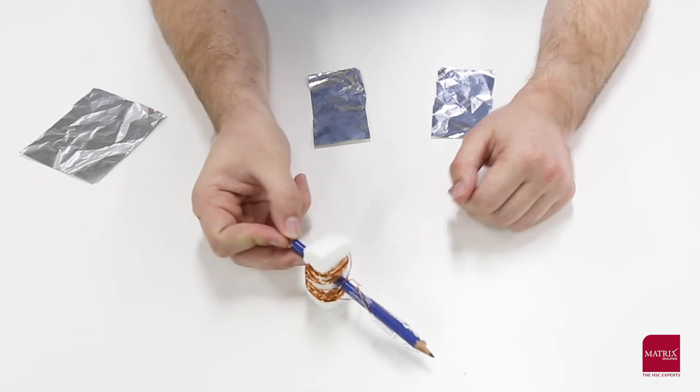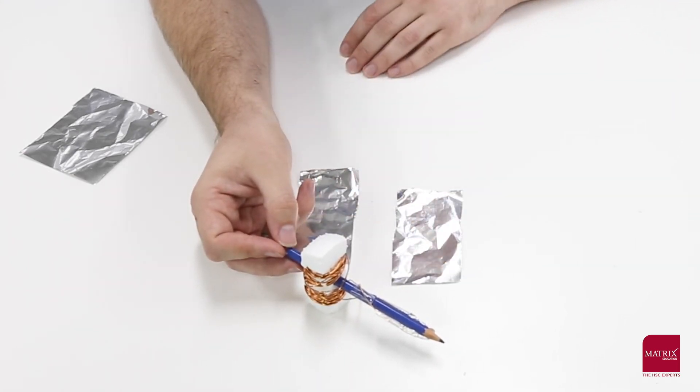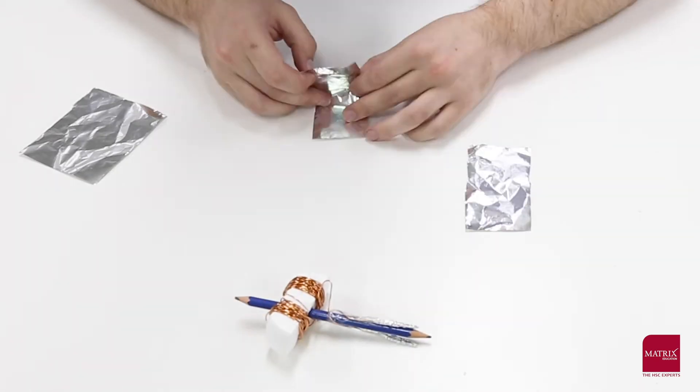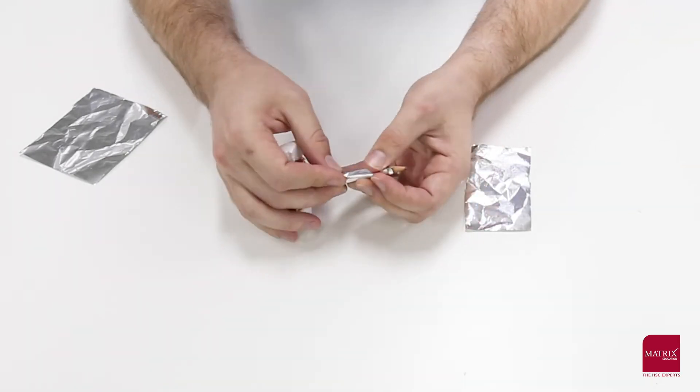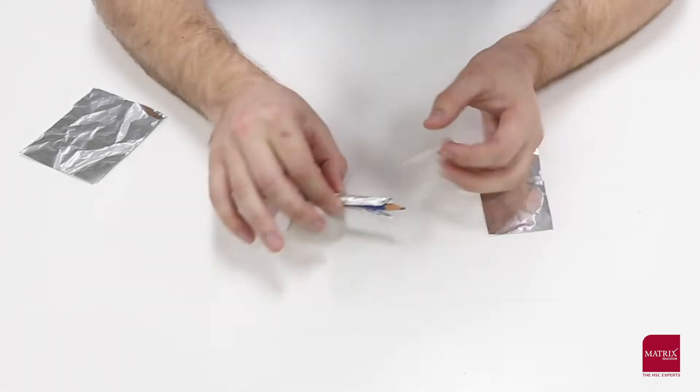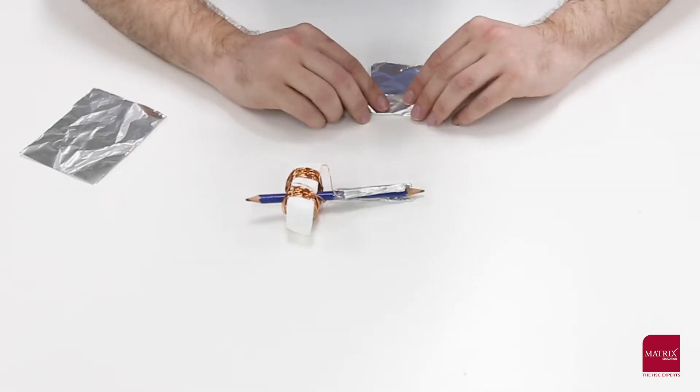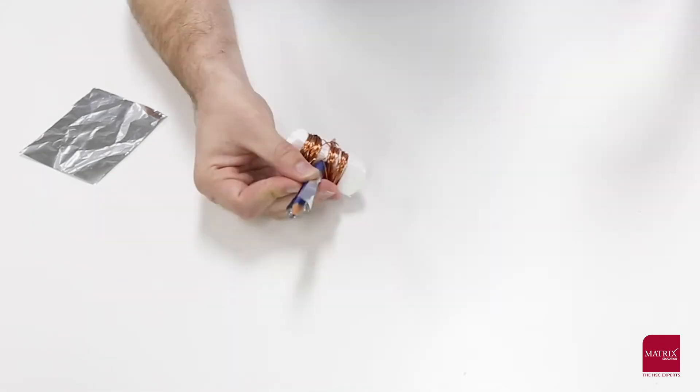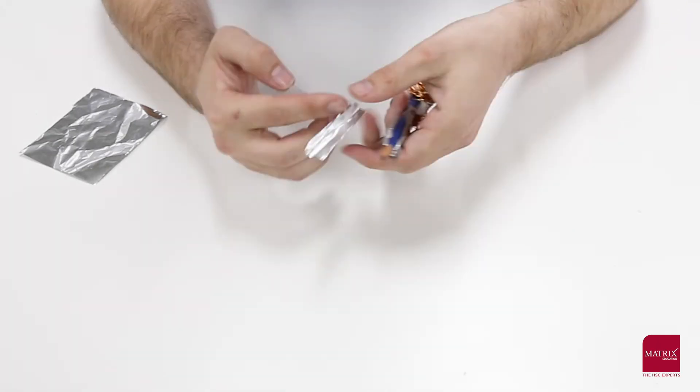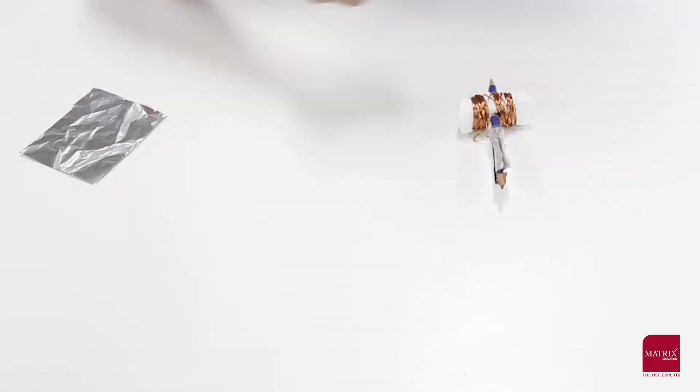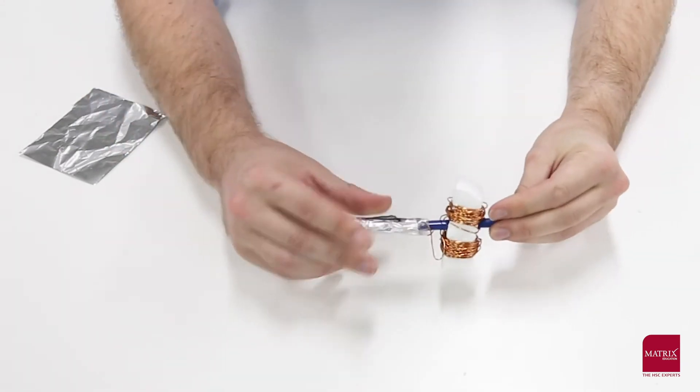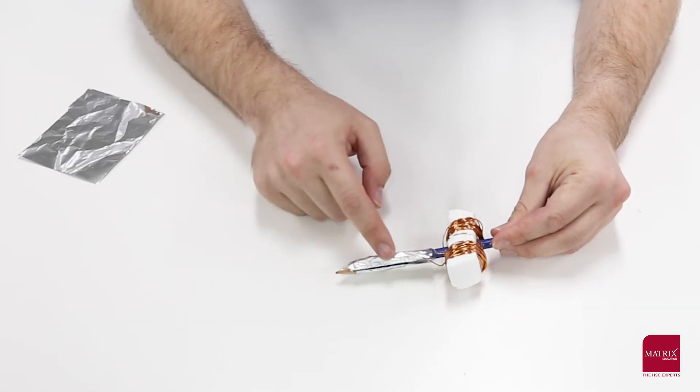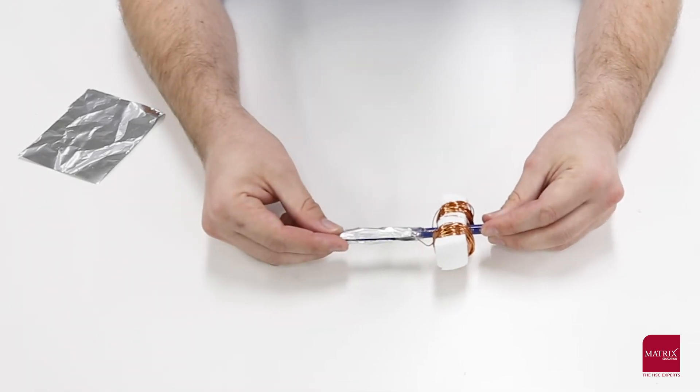What we're going to do now is put some aluminum foil on both ends to ensure that the system remains in electrical contact for the most of its rotation.